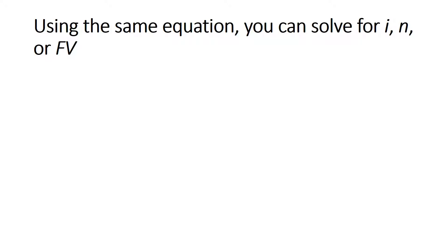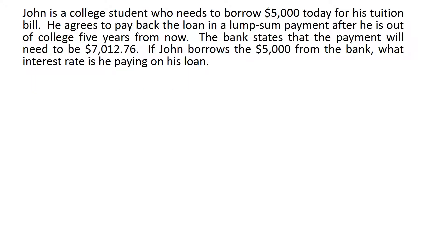Using the same equation, the missing variable is not necessarily the present value. You can use it to solve for the interest rate, the number of time periods, and the future value. For example: John is a college student who needs to borrow $5,000 today for his tuition. He agrees to pay back the loan in a lump sum after five years. The bank states the payment will need to be $7,012.76. What interest rate is he paying? The present value is $5,000, n is 5 years, the future value is $7,012.76, and we are solving for the interest rate.